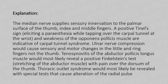Explanation: The median nerve supplies sensory innervation of the palmar surface of the thumb, index, and middle fingers. A positive Tinel's sign elicits paresthesia while tapping over the carpal tunnel at the wrist, and weakness of the opponens pollicis muscle is indicative of carpal tunnel syndrome. Ulnar nerve compression would cause sensory and motor changes in the little and ring fingers, not the thumb. Tenosynovitis of the abductor pollicis longus would most likely reveal a positive Finkelstein's test, with pain over the dorsum of the thumb. Thoracic outlet syndrome would most likely be revealed with special tests that cause alteration of the radial pulse.